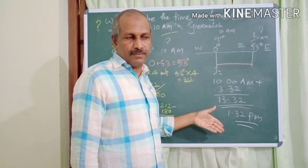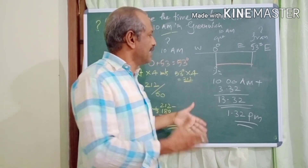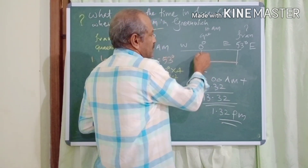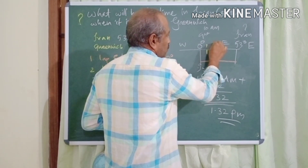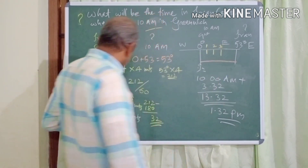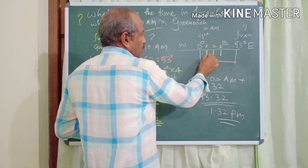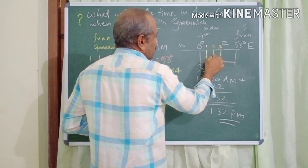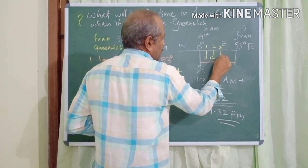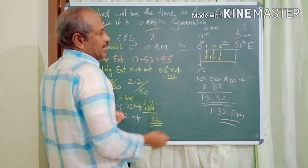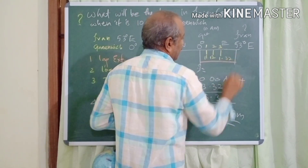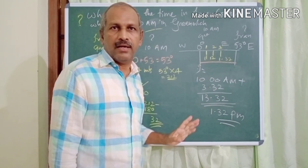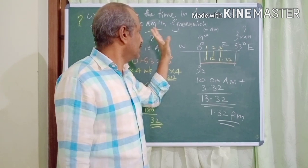You can verify this using the figure. Time increases towards the east. Starting at Greenwich — 10am — add 1 hour: 11; add 2 hours: 12; add 3 hours: 1pm. The remaining 32 minutes gives 1:32pm. So 1:32pm is the time in Iran when it is 10am in Greenwich.